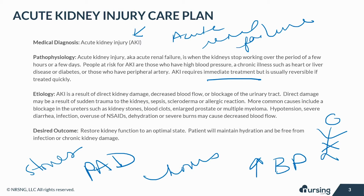Hypotension, severe diarrhea, infection, overuse of NSAIDs, dehydration, or severe burns may cause decreased blood flow. The desired outcome for these patients is to restore kidney function to an optimal state, with the patient maintaining hydration and being free from infection or chronic kidney damage.